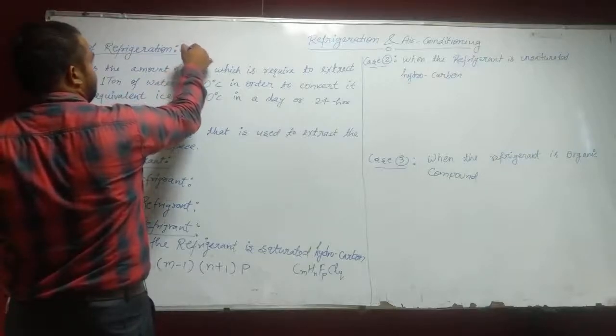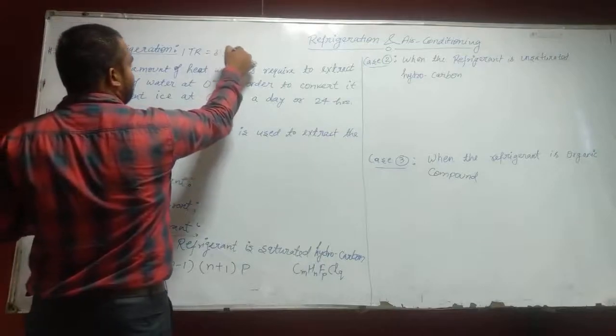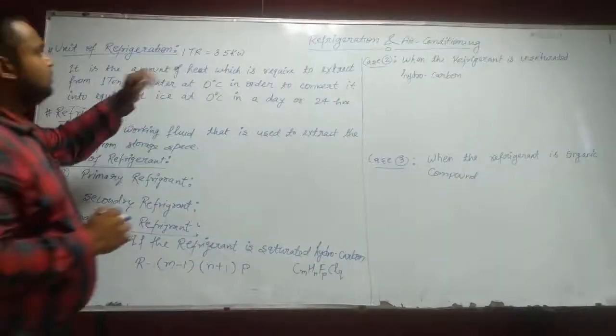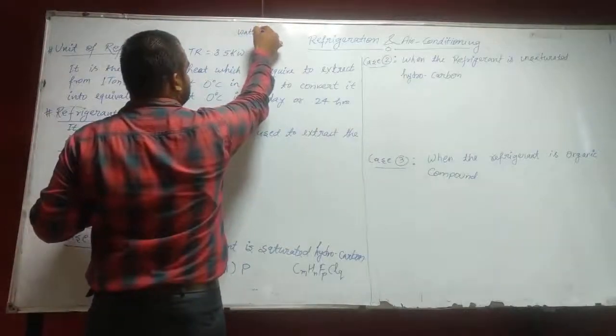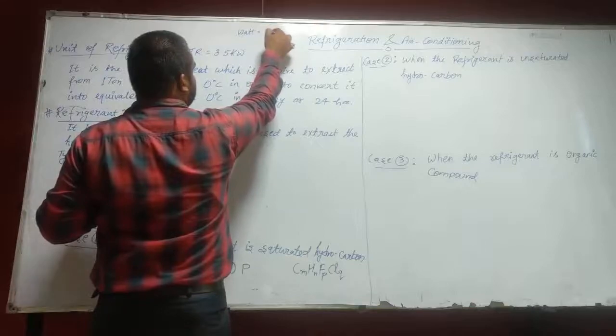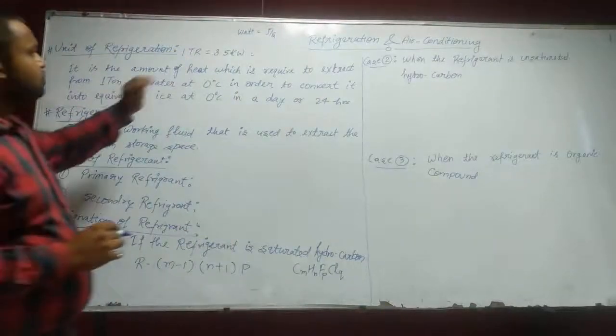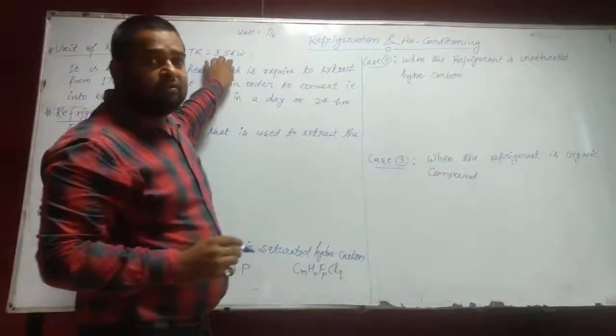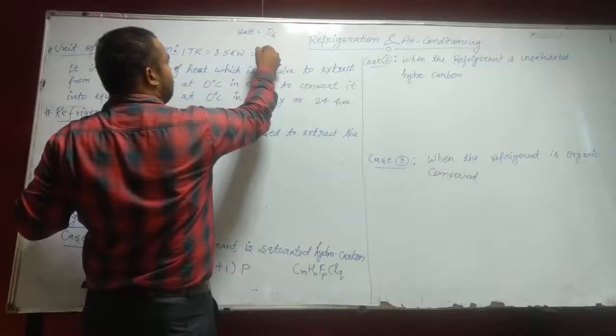1 TR equals 3.5 kW. kW means watt, which means joule per second. If we want to convert it into kW per minute, then we can multiply it by 60. Then it will come to 210 kW per minute.